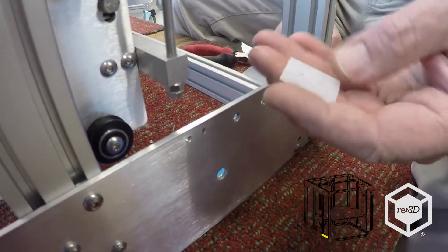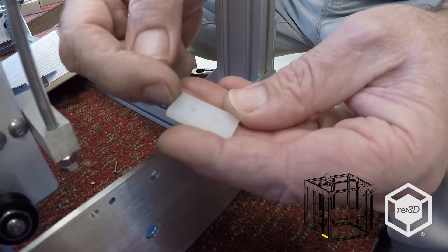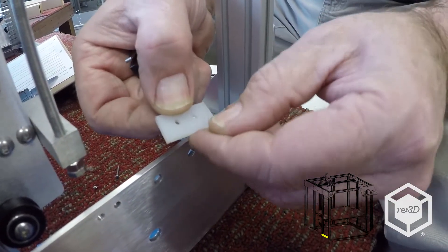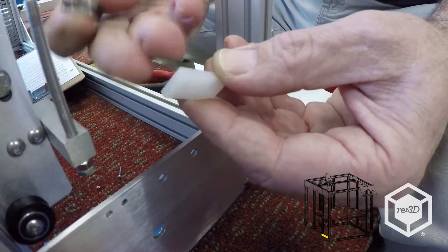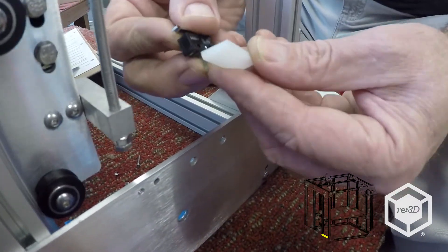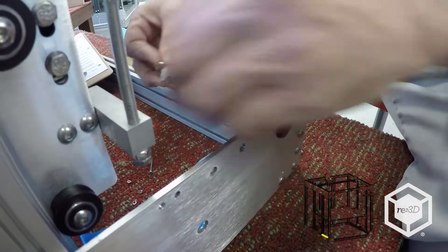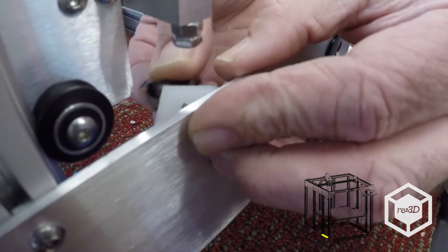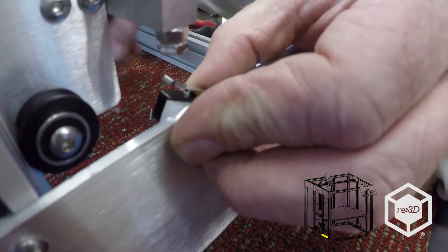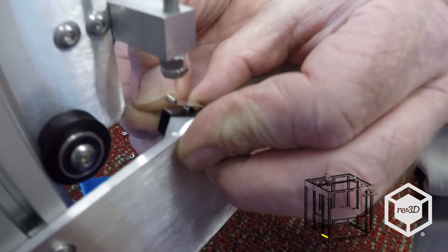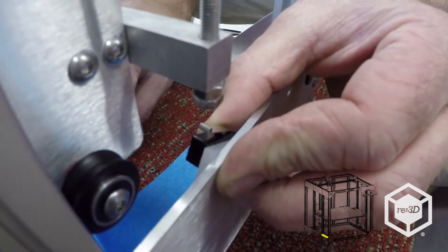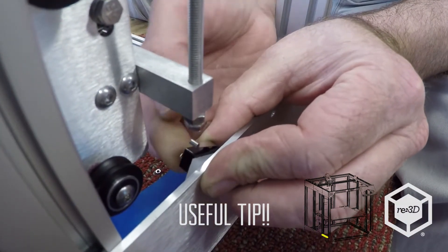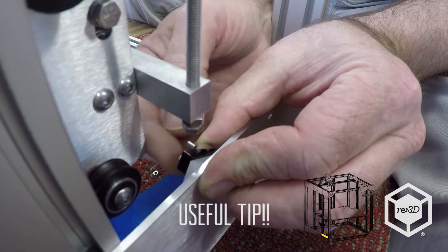You notice the white separator has the holes kind of offset. Normally you want to put the longest distance down. Hinge towards the front. These are so small that it's best just to keep it on your index finger and then just push it on there straight and then just try to get it started.